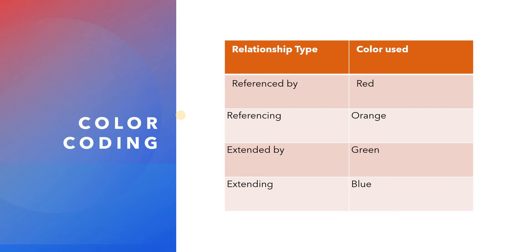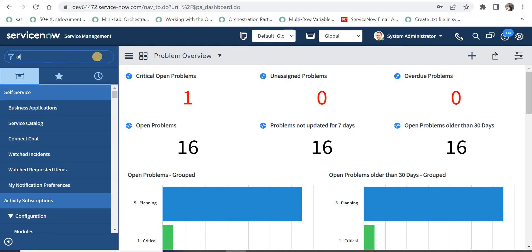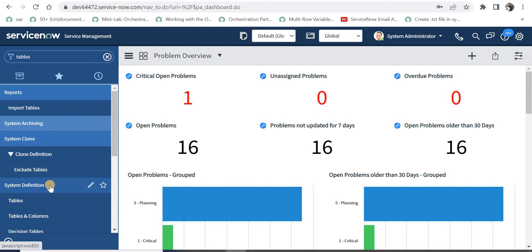There are a few color codings already defined by ServiceNow. For each relationship type there is a different color used on the schema map. For example, for 'referenced by' they use red, for 'referencing' orange, 'extended by' green, and 'extending' blue, which we will see in ServiceNow in a second.